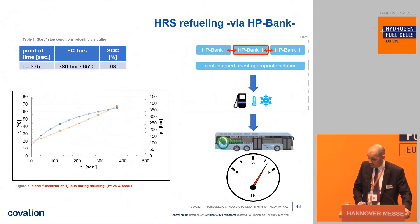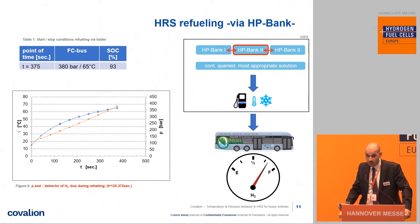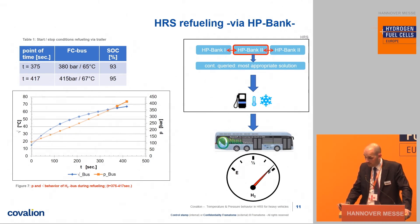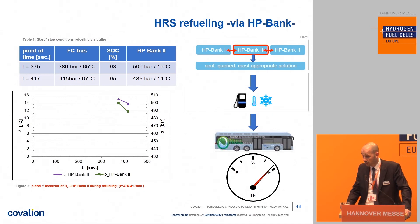The software again tries to find the most efficient way to refuel the bus. Now we refill from HP bank number two — we open the valve again. It follows the same sequence as before, but now we reach the end value of 95% SOC at a temperature of 67 degrees and 415 bar after 470 seconds. Looking at the behavior of bank two: because only a small amount of hydrogen was needed for the last 2%, we went from 500 bar and 15 degrees down to only 489 bar and 14 degrees. The bus has now reached its target.